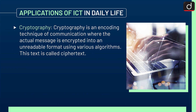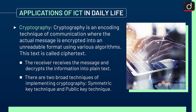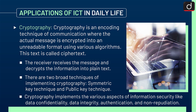Next is cryptography. Cryptography is an encoding technique of communication where the actual message is encrypted into an unreadable format using various algorithms. This text is called cipher text. The receiver receives the message and decrypts the information into plain text. There are two broad techniques of implementing cryptography: symmetric key technique and public key technique. Cryptography implements various aspects of information security like data confidentiality, data integrity, authentication and non-repudiation.